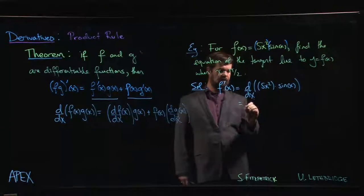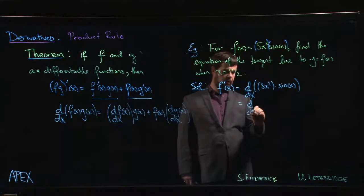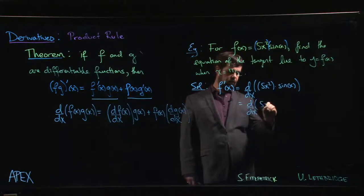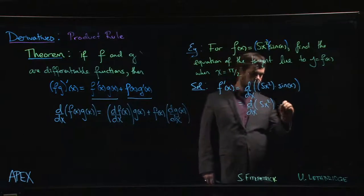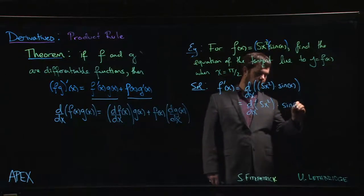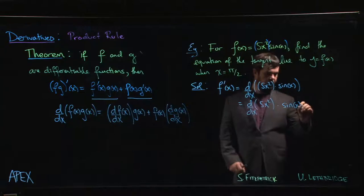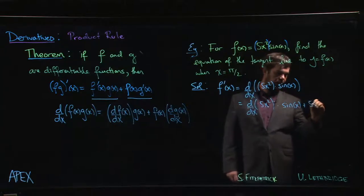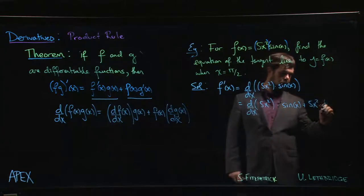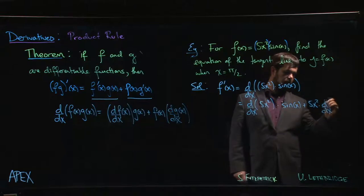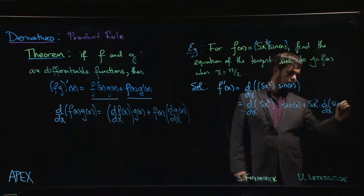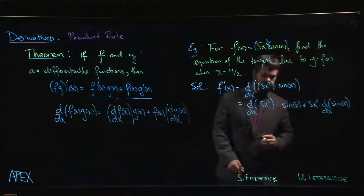Product rule says we do the derivative of 5x squared, then we multiply by sine x plus 5x squared times the derivative of sine x.